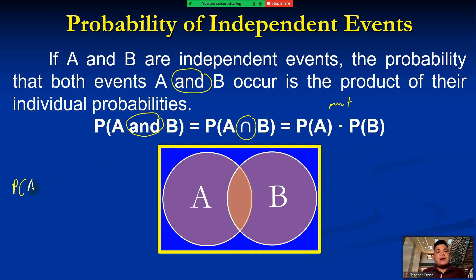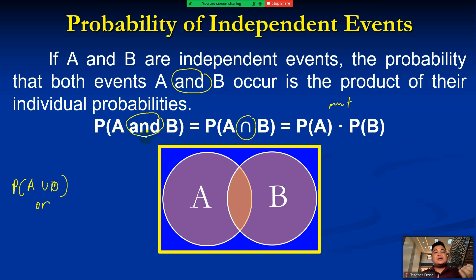For union, from the previous lesson, we have probability of A union B. Union in words is 'or.' So the indicator for union of two events is the word 'or' in the problem, while the word 'and' means we use the formula for independent events. Another difference: for independent events we're talking about both events A and B, while for union of two events we're only talking about one of the two events.